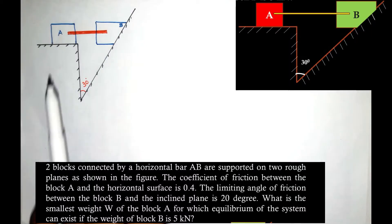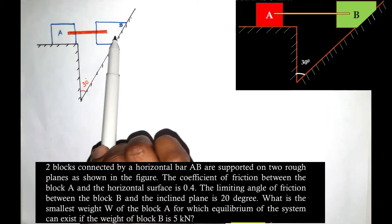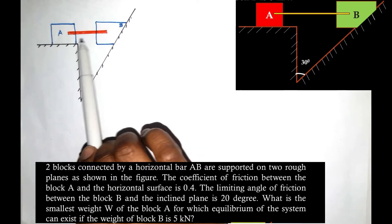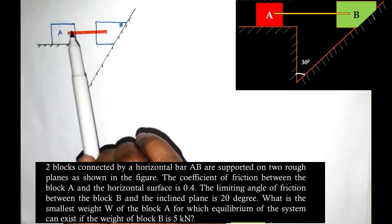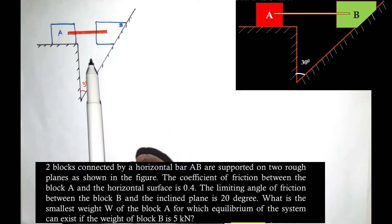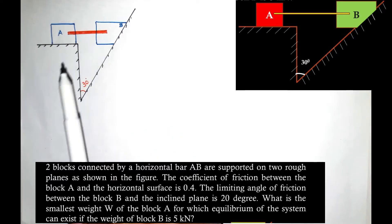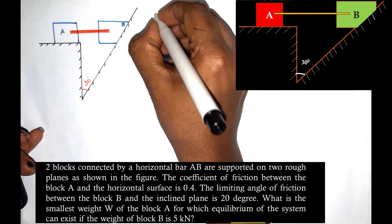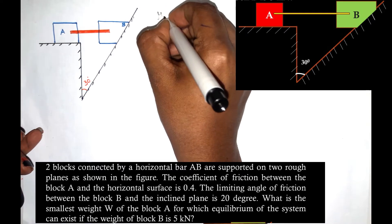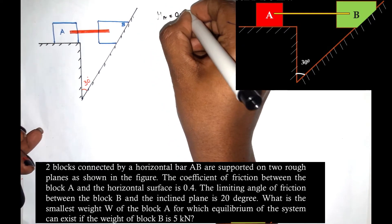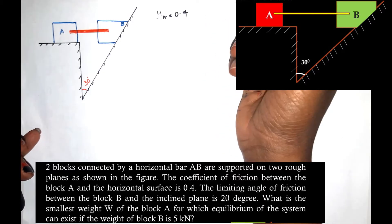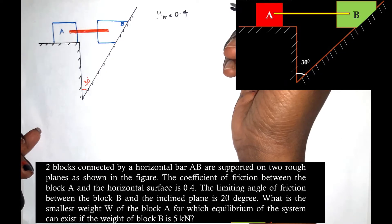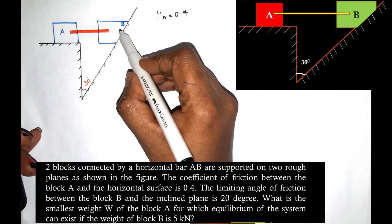Let's look at the two blocks A and B, which are connected by a rigid bar. The coefficient of friction between block A and the horizontal surface is 0.4. The limiting angle of friction for block B on the inclined plane is 20 degrees.